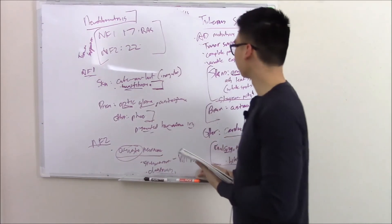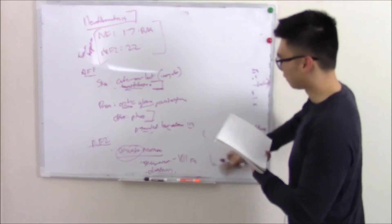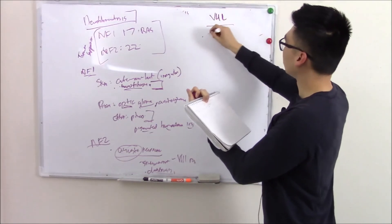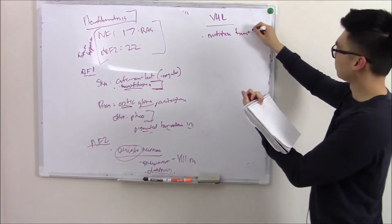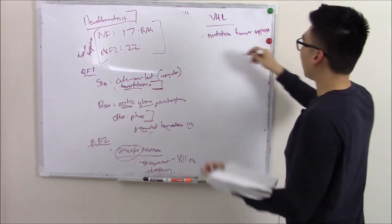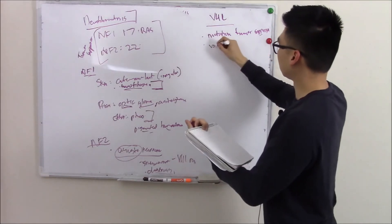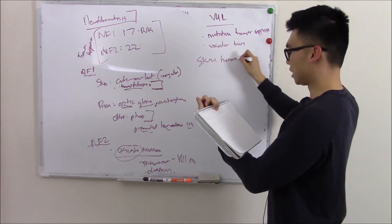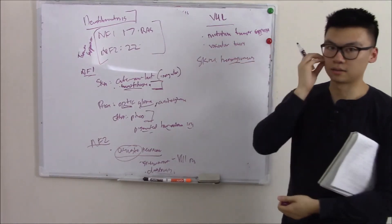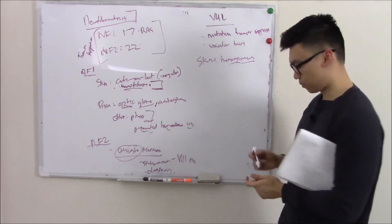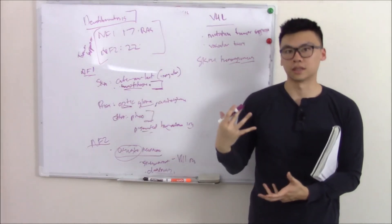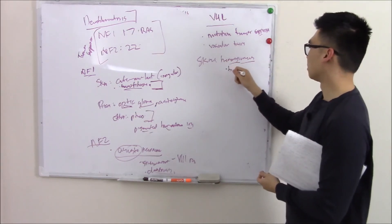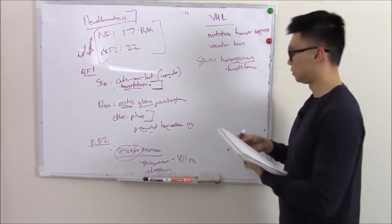We have one more: von Hippel-Lindau or VHL. VHL is due to a mutation in, you guessed it, a tumor suppressor. This particularly affects vascular tissue. Skin manifestations: you can have hemangiomas. You'll see these red skin lesions. They don't look like port wine stains. Hemangiomas are more brightly colored, they're actually raised, they're papular. That's the skin manifestation.